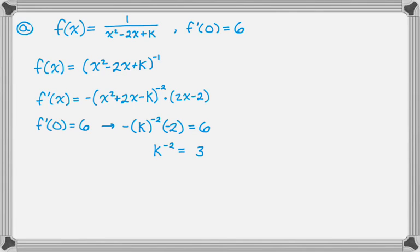Which means that k to the negative second has to equal three. We're also told that k has to be greater than zero, so we don't have to worry about a plus or minus situation here. And so k is three to the negative one half, or you might prefer to write that as k is one over the square root of three. All right, so that's part A.